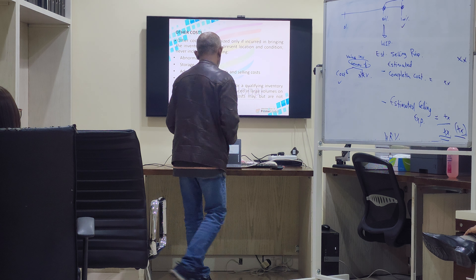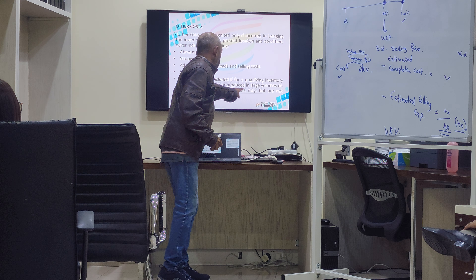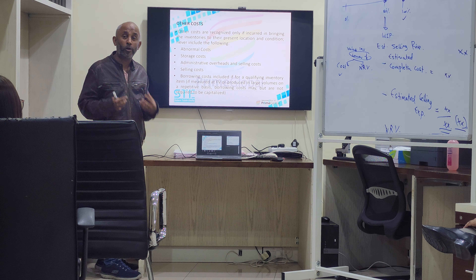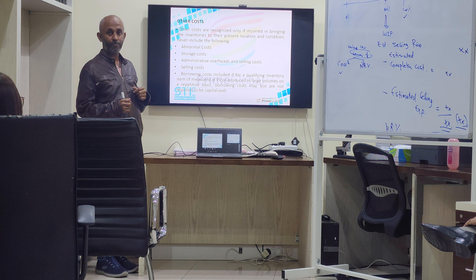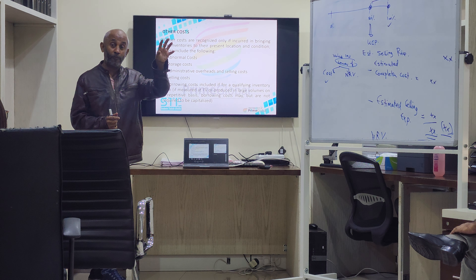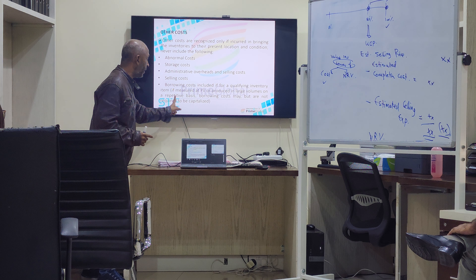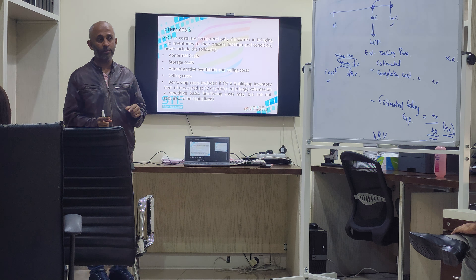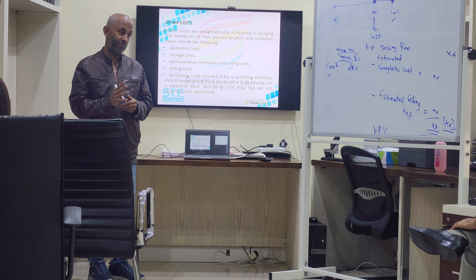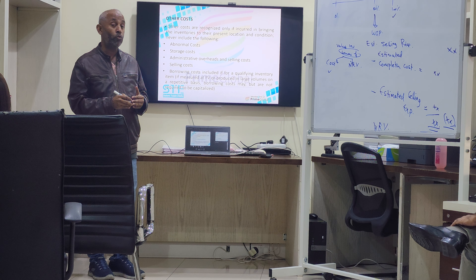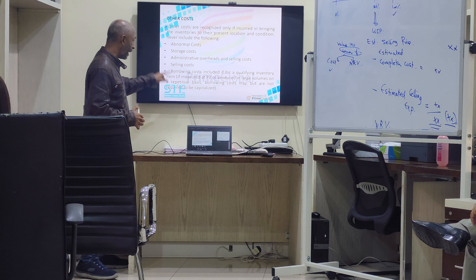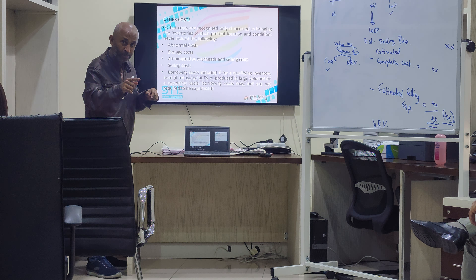What do you mean by qualifying inventory? Producing large volumes on a repetitive basis, and I borrow a loan for the purpose of that. The interest that I am paying on the loan is for the purpose of continuously ensuring smooth production of that inventory — then that inventory becomes qualifying inventory. Meaning, you need to have substantial effort in completing the production. In that case, borrowing cost is taken as part of the cost of inventory; if not, it goes to profit and loss.